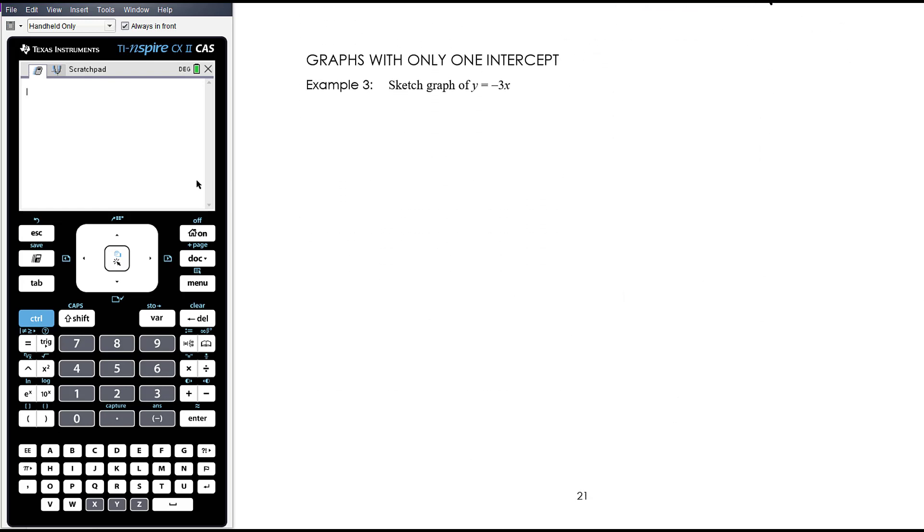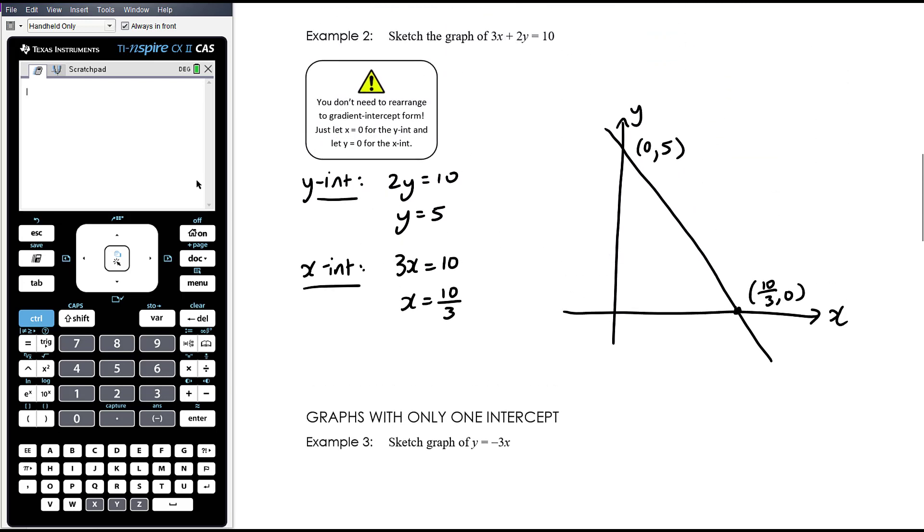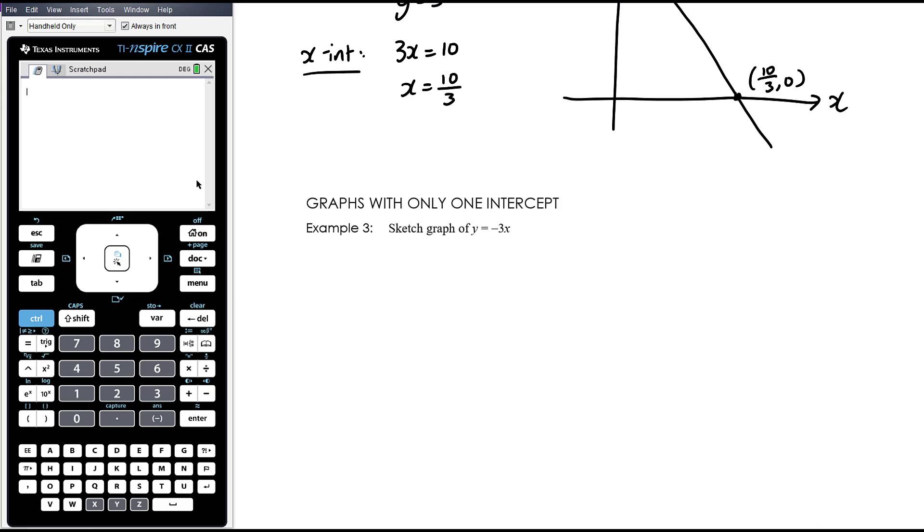Graphs with only one intercept. The key thing is that the graph isn't fully defined unless we have at least two points marked on it. Otherwise, there must be enough information labeled on the graph so that someone could just look at the graph and come up with the equation. So that is two points. And conventionally we need to have the axis intercepts. So we need those two points. The issue we have here is when a graph only has one intercept, we only have one point. So you must then include a second point.